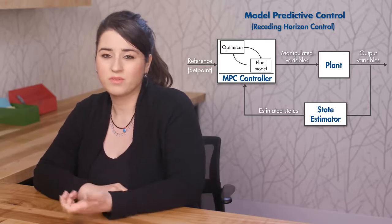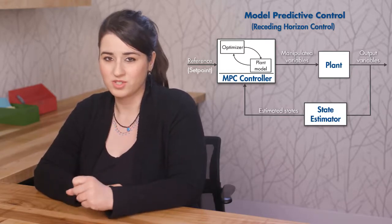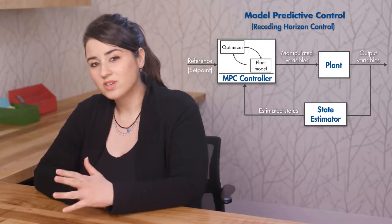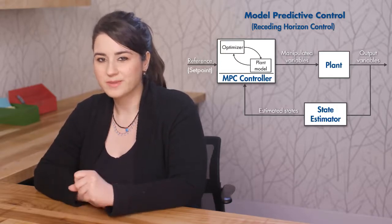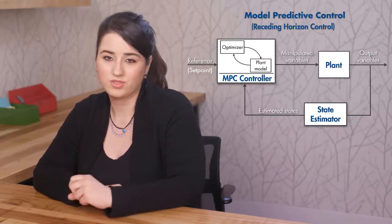In the car example, we assumed that the lateral position of the car can be measured. But if you cannot directly measure the states of a system, they can be estimated by a state estimator and fed back to the MPC controller.